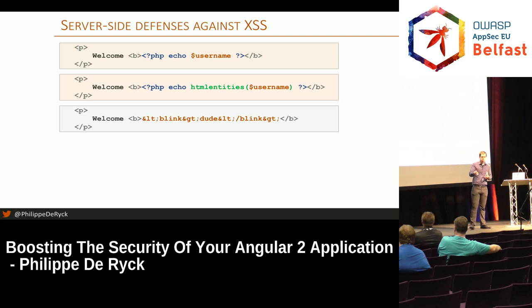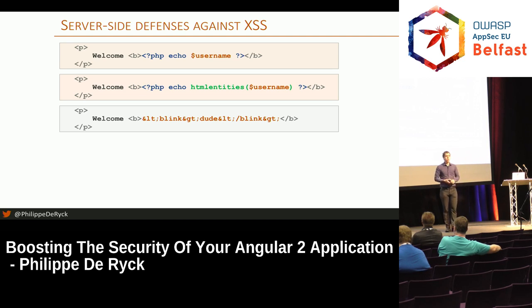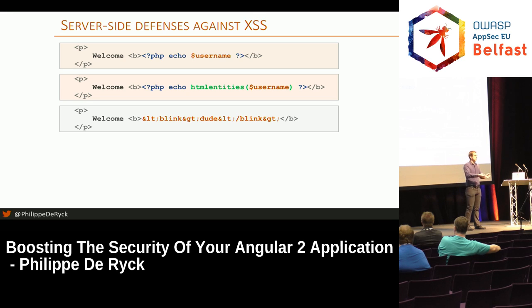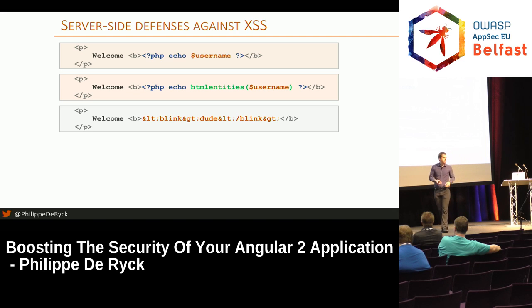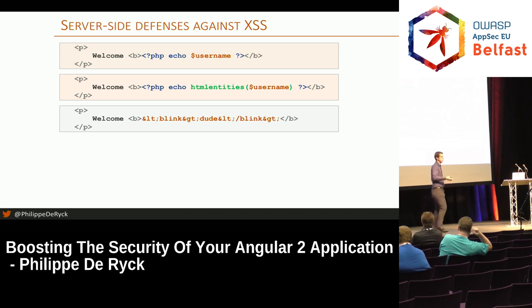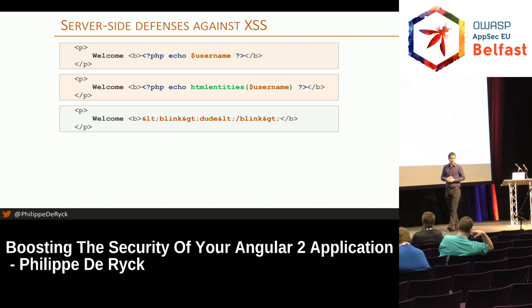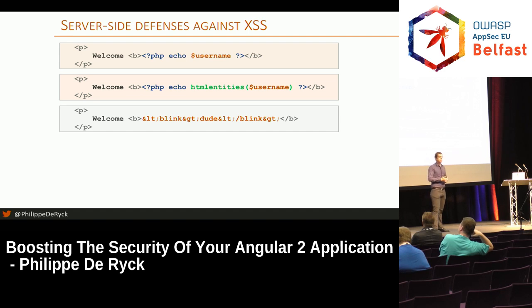The server knows it's putting data there, but the browser has no idea what's going on. It sees a script tag inside an h1 and thinks: is that supposed to be there? When the browser is in doubt, it's simply going to execute it. That's what the browser does, and that's when you have cross-site scripting.